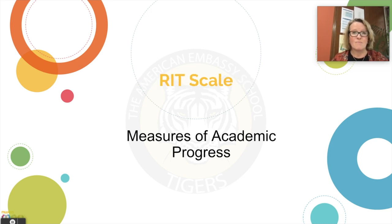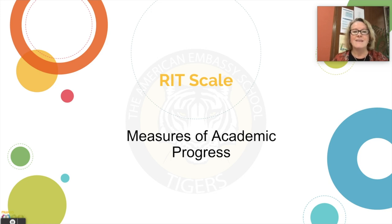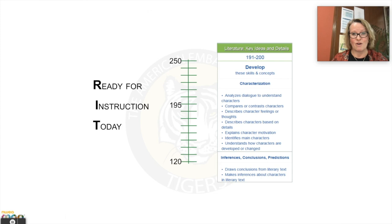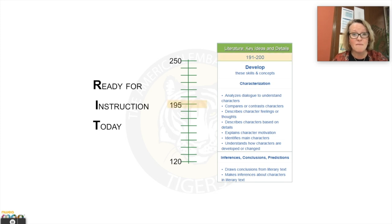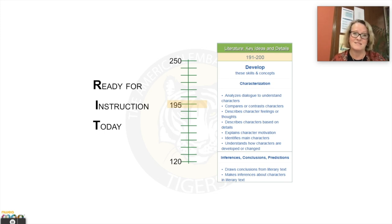For the MAP results, we do not focus on the percentiles as they do not inform instruction. What informs instruction for us is the RIT scale. This RIT scale is what we call the 'ready for instruction today' level, and there is a number that is given in each subject. This number is tied to specific learning statements on that entry level for each of our students. That is the zone of proximal development — what they're ready for instruction today.